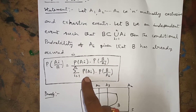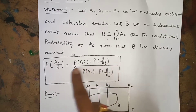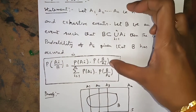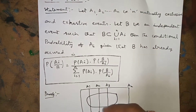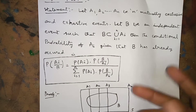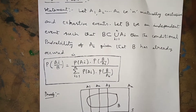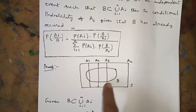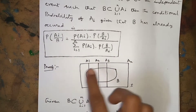The denominator Σᵢ₌₁ⁿ P(Aᵢ) · P(B|Aᵢ) is called the Total Probability. To prove this theorem, given that B ⊆ ∪ᵢ₌₁ⁿ Aᵢ, I draw a diagram: A₁, A₂, A₃, A₄, ..., Aₙ are mutually exclusive and exhaustive events, and B is an independent event contained within their union.